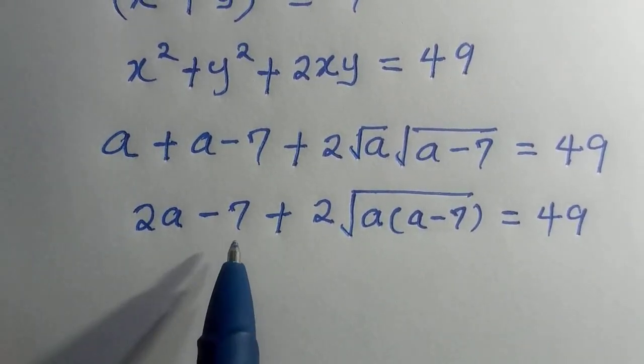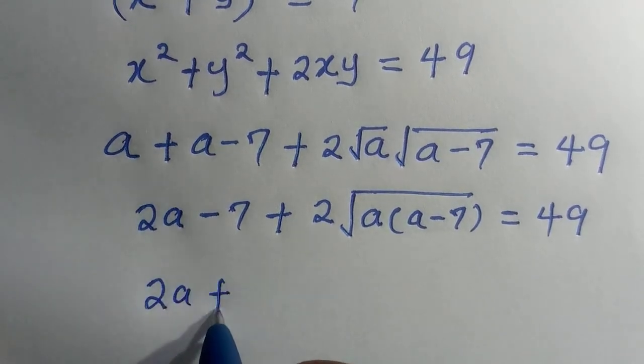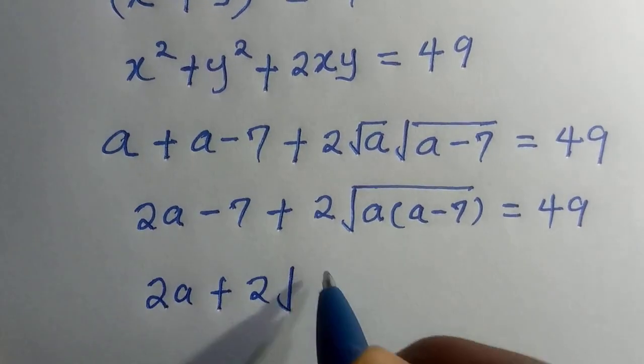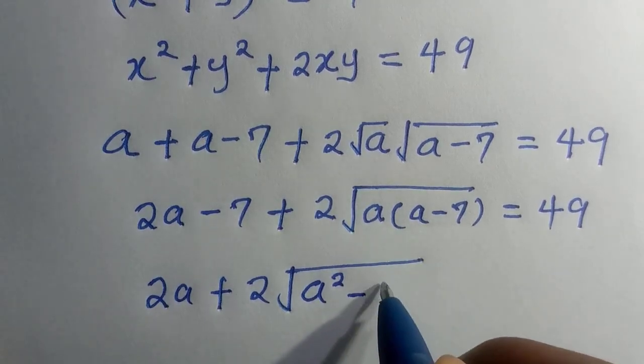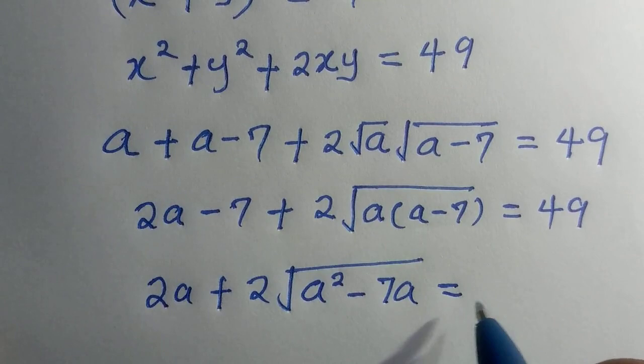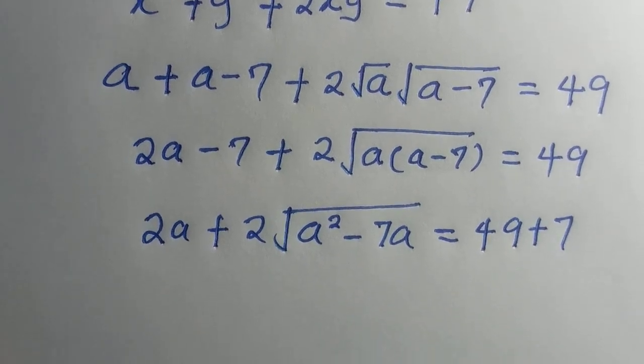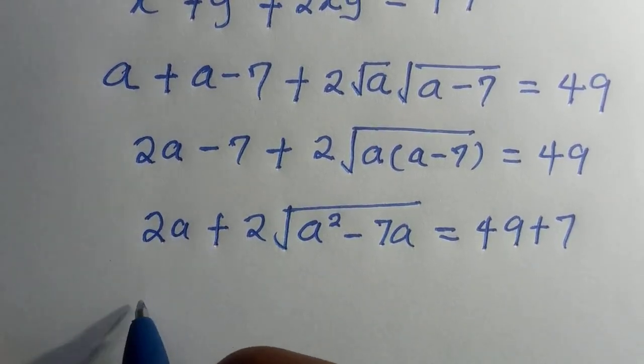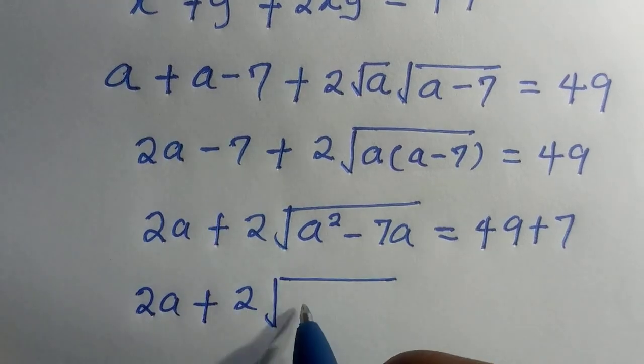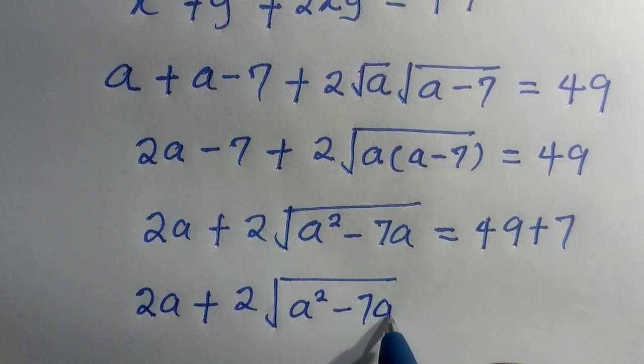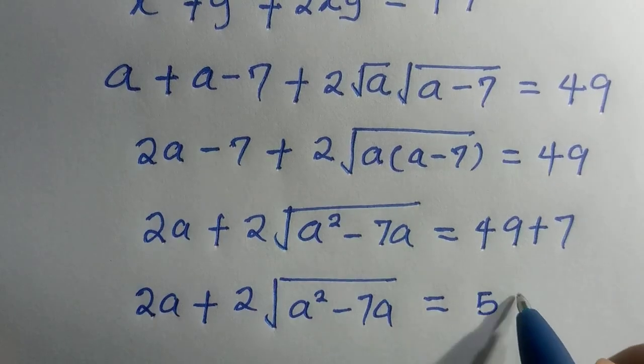Then let's take 7 to the other side. We have 2a + 2√(a·a) is given as a². a times 7 is given as 7a.